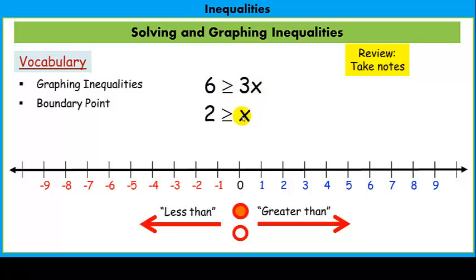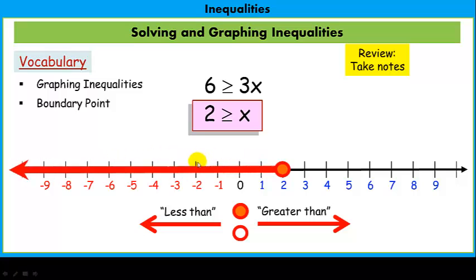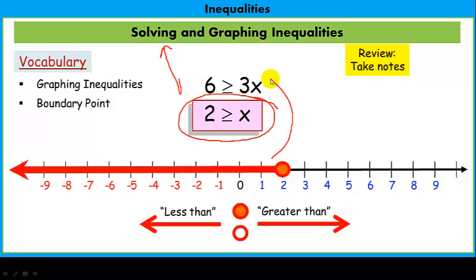And I get x is — reading from the variable side — less than or equal to 2. This is our solution. This is our boundary point at 2. I go to 2, and I notice I'm going to fill it in because it's saying all numbers that are less than or equal to 2. And all those numbers are to the left. So that's the graph. Remember, this is the solving part and this is the graphing part.